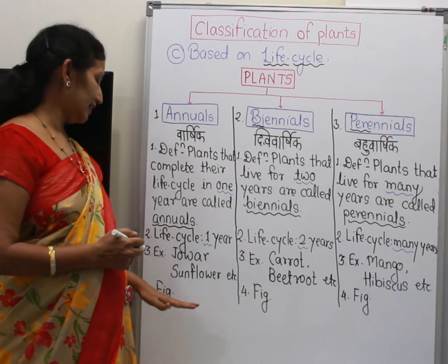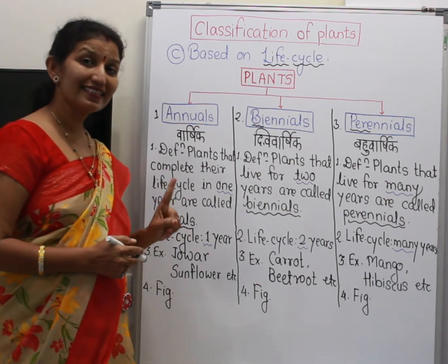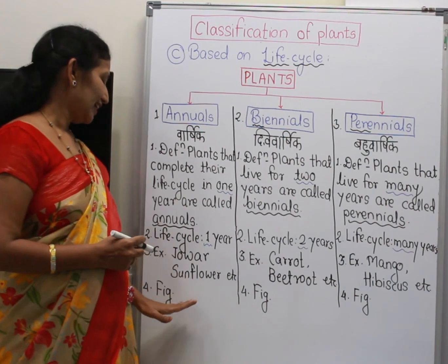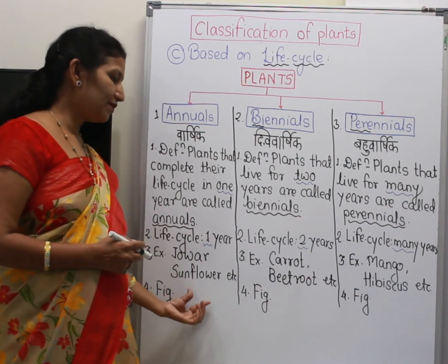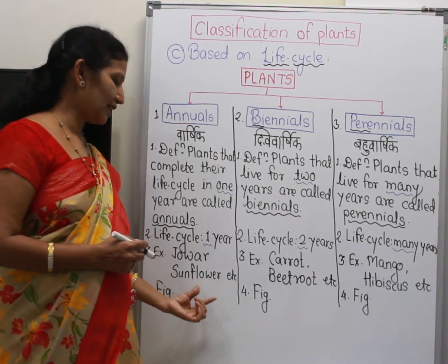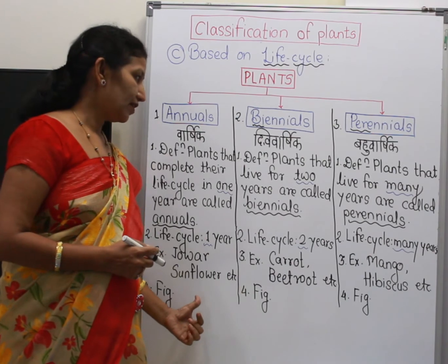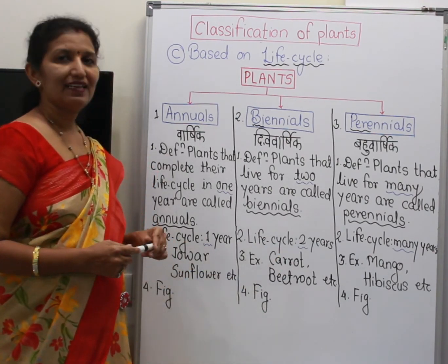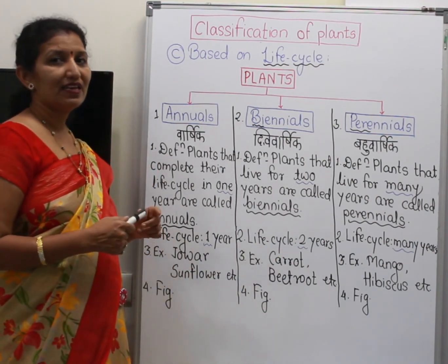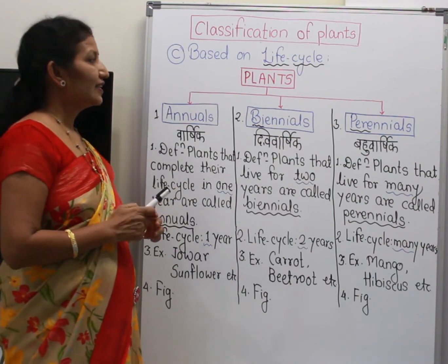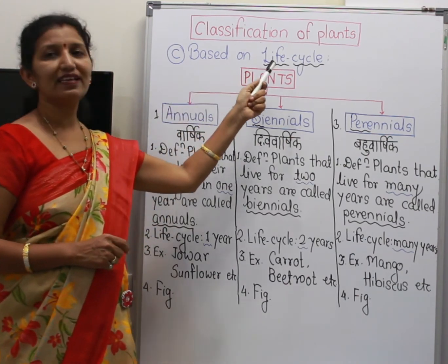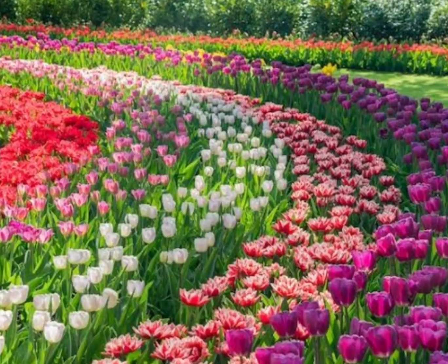And the last point is figures — you have to draw any one figure from the examples of annuals, biennials, and perennials. In this week, we have completed the three types based on their life cycle: annuals, biennials, and perennials.